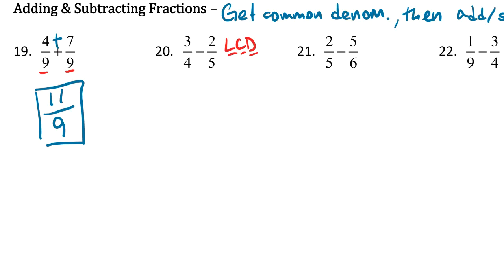So what is the LCD in this case? The smallest number that both 4 and 5 will go into, in this case, is 20. So the LCD is 20. We want to make both the 4 and the 5 into a 20. So I'm going to rewrite this just so I have a little bit more room and I can show you exactly how this is going to be done.